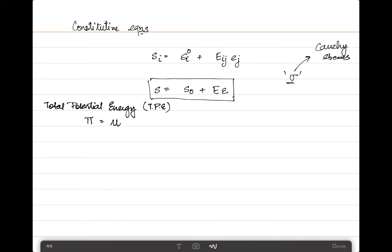The total potential energy, also written as TPE and usually denoted as pi, can be given as the difference between the total strain energy in the system minus the work done, or the external work done in the system. The strain energy is the energy stored in the system as internal stress, and the work done is from external forces.